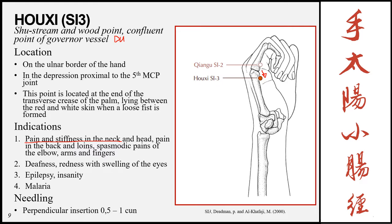SI-3 can also treat pain of the back and loins, and spasmodic pain of the elbow, arms, and fingers — due to the normal flow of the meridian. Additionally it treats deafness, redness with swelling of the eyes, epilepsy, insanity, and malaria. Insertion is perpendicular 0.5–1 cun. There is also a through-needle technique using a 2-cun needle from SI-3 directed towards Large Intestine 4 or Large Intestine 3.